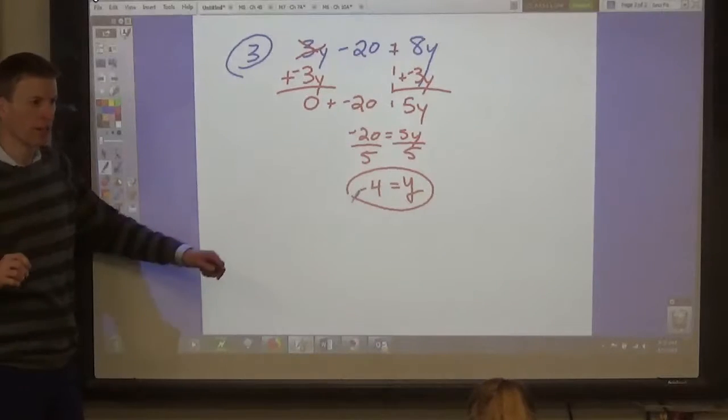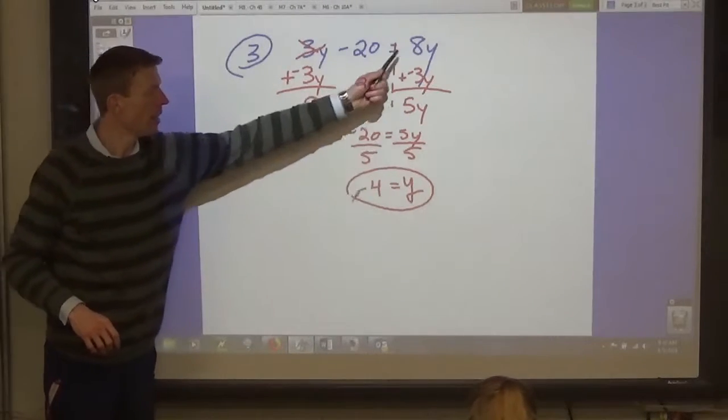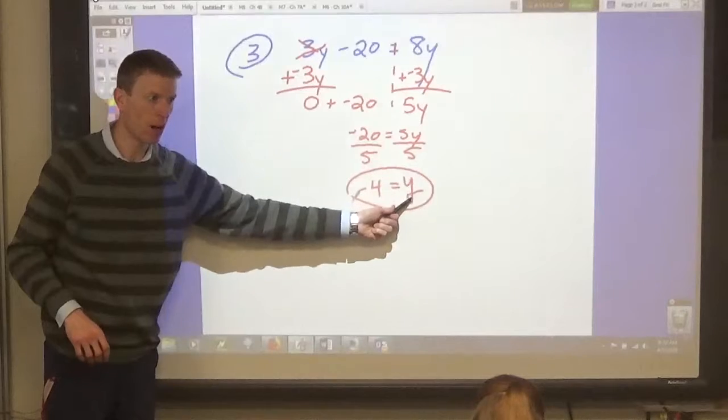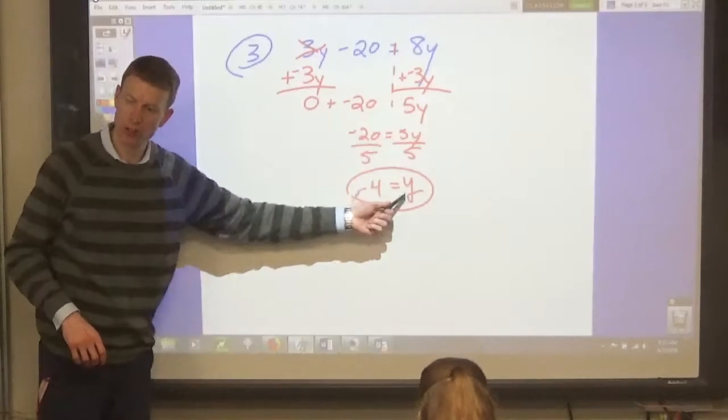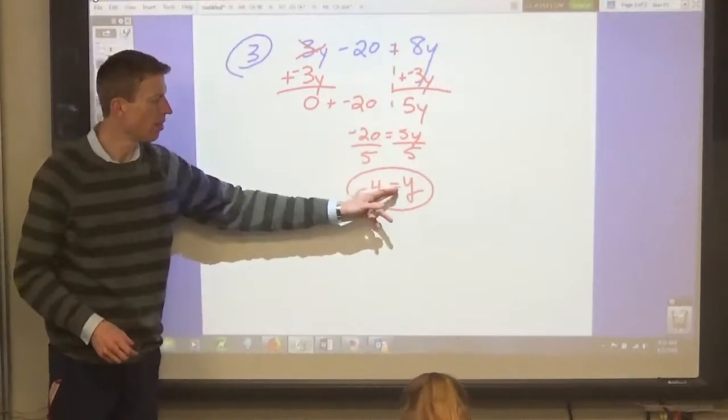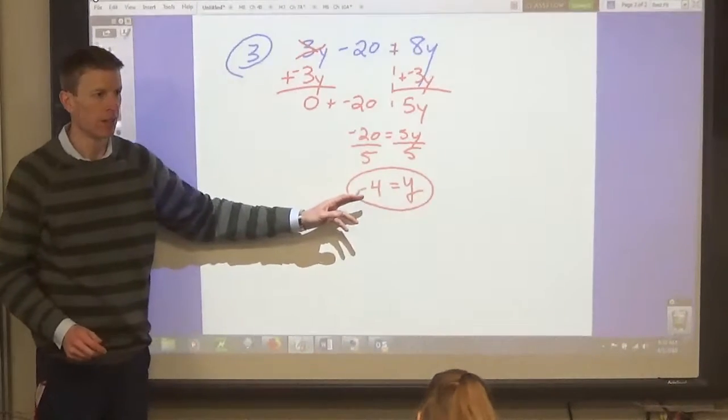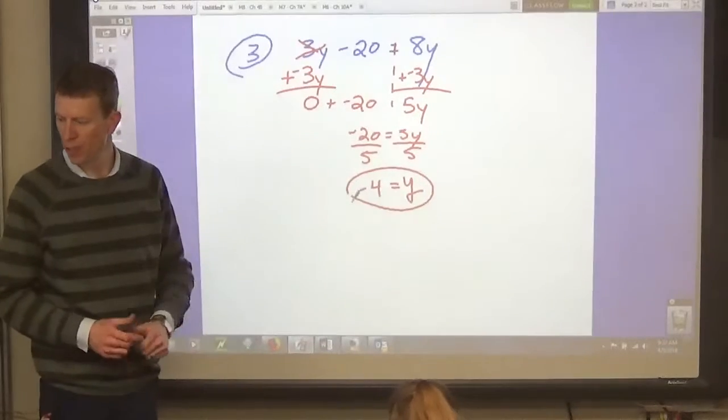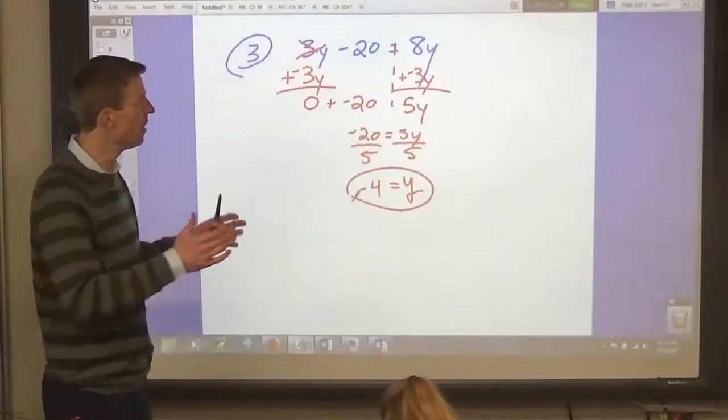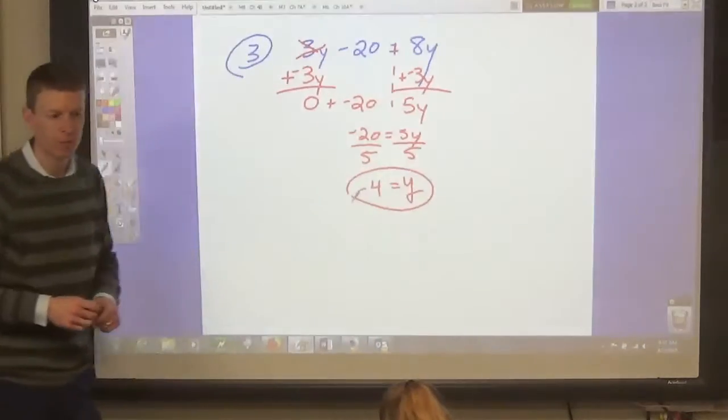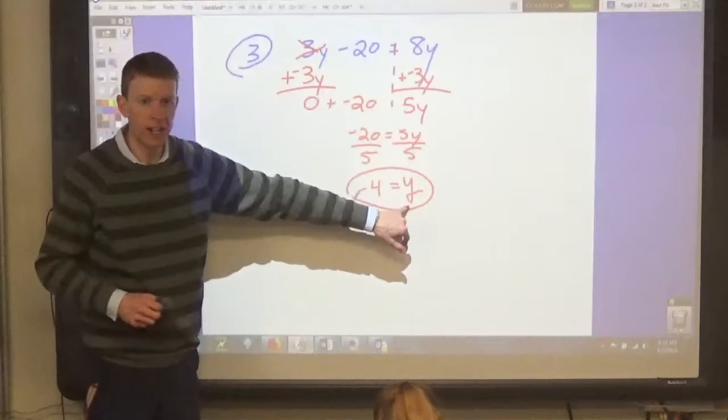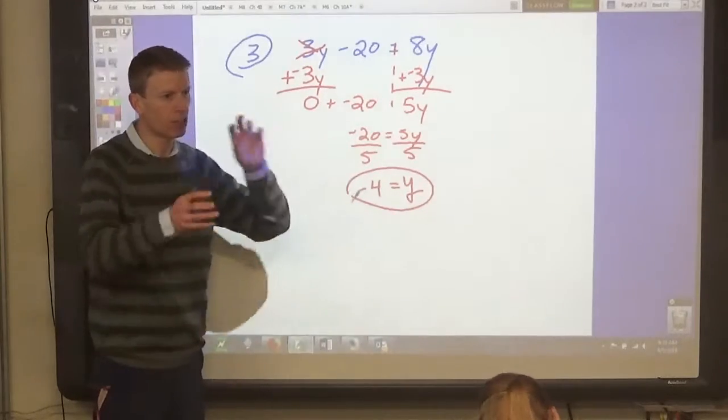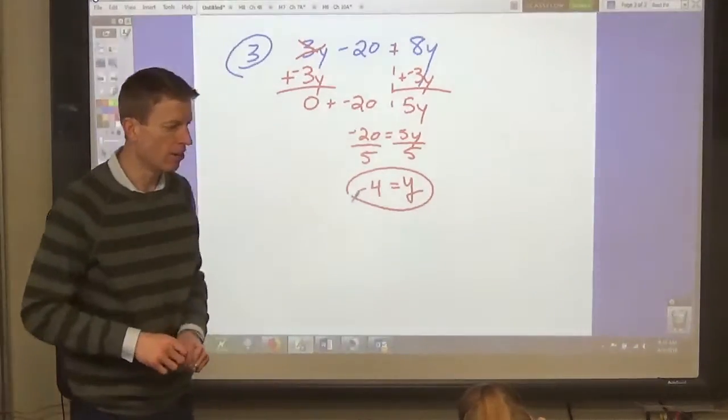Now, something important. When you're solving an equation and the y's are on the right side, write your solution the same way. So, keep the y's on the right side when you're writing your solution. Don't rewrite it so it says y equals negative 4. And the reason for that, is that in the next lesson, starting tomorrow, we're going to be solving inequalities. Where the sides are greater than or less than. And so, if the y's are on the right side of an inequality, they have to stay on the right side of an inequality. We can't just write it the other way, without following a procedure.